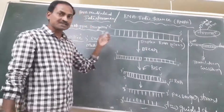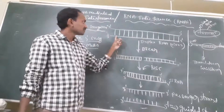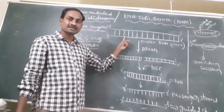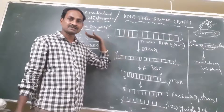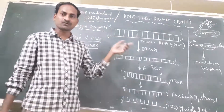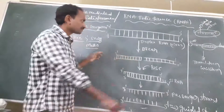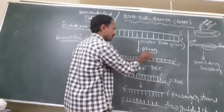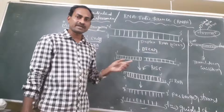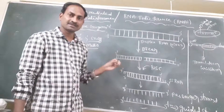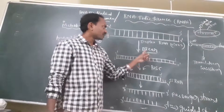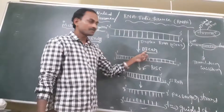Whenever an RNA virus infects a plant, the infection results in the production of double-stranded RNA. This double-stranded RNA, after entering into the cytoplasm, induces a Dicer protein.